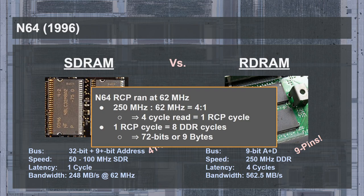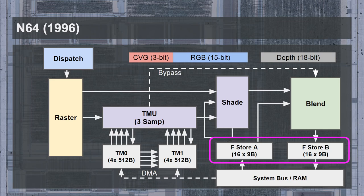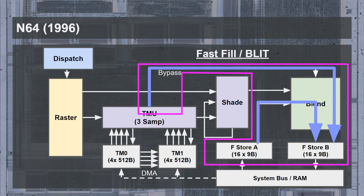The N64's GPU ran at 62 MHz, which is 4 times slower than the RDRAM. This means the 4-cycle read latency becomes a 1-cycle latency for the N64, the same as for SDRAM. One N64 cycle is 8 DDR cycles for the RDRAM, which is 72 bits or 9 bytes — and that's where the 9-byte buffer comes from: the size of a 1-cycle read from the RDRAM. The N64 extended the 15-bit color into an 18-bit color value by including a 3-bit coverage value used for anti-aliasing. The depth was similarly extended from 16 bits to 18 bits. The 18-bit values divide up the frame store rows into 4 values — either 2-color and 2-depth, or 4-color, or 4-depth. These buffers are automatically fetched and stored by the hardware. The blending stage could also be used to perform fast filling and block transfers at a rate of up to 4 pixels per cycle.